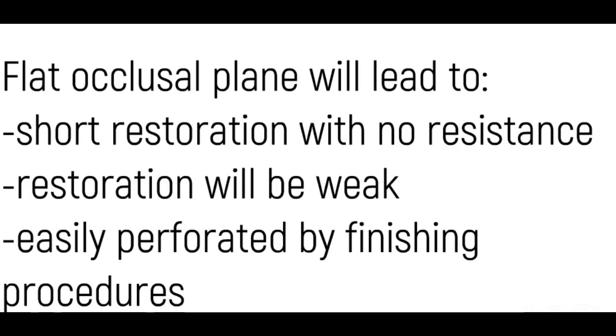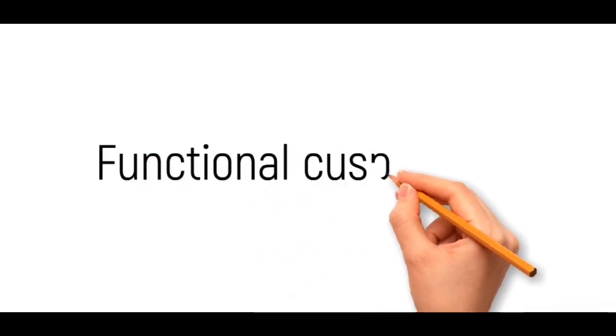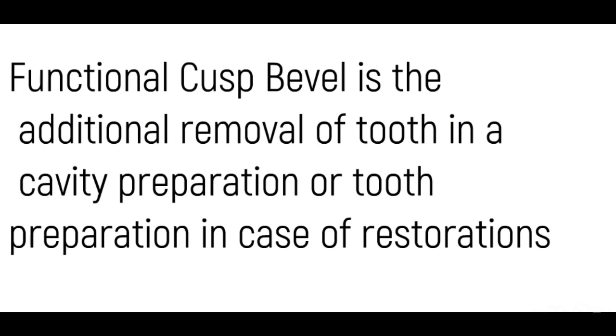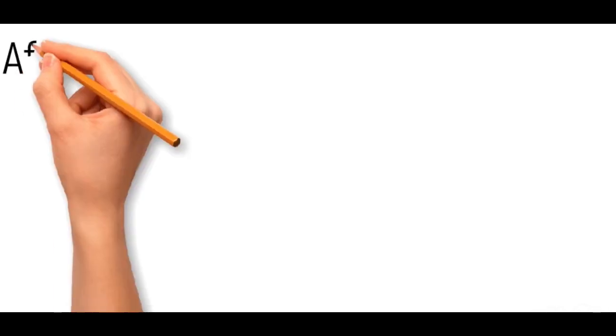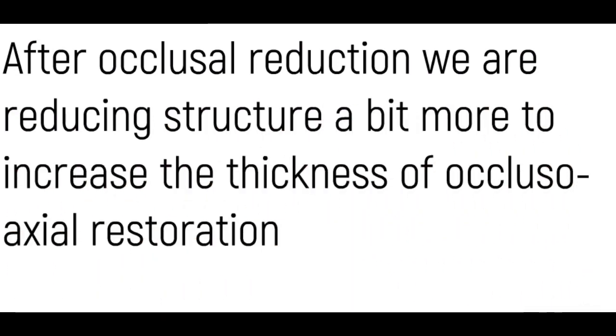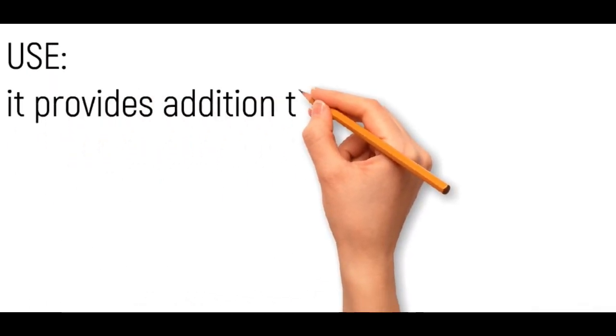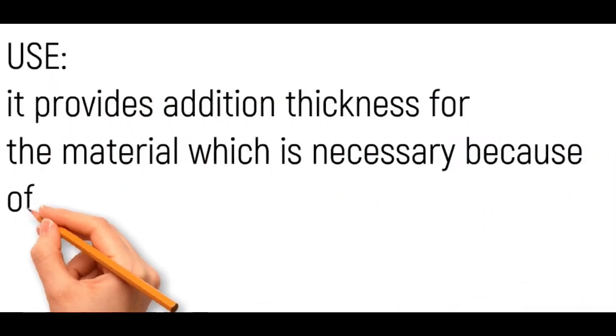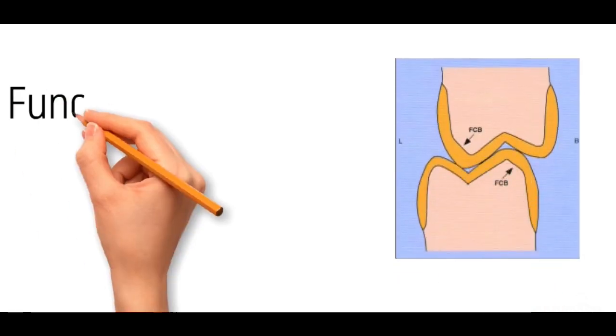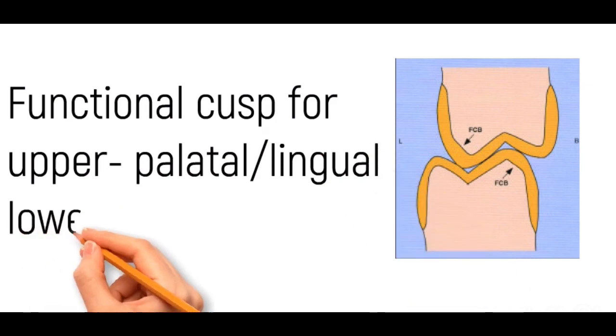Let's talk about functional cusp bevel. It's the additional removal of teeth or occlusal surface in a preparation. After occlusal reduction we are reducing the structure a bit more to increase the thickness of the occlusal axial restoration. This provides additional thickness for the material which is necessary because of maximum weight bearing areas. A bevel will help to bear this excess load without fracture. The functional cusp bevel for the upper arch is the palatal or lingual cusp, while for the lower one it's the buccal cusp.